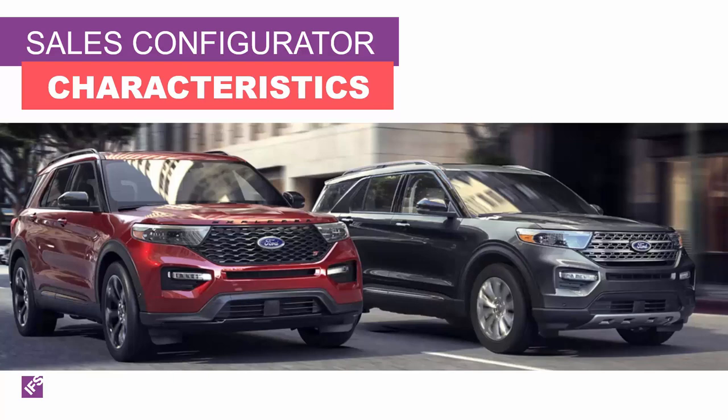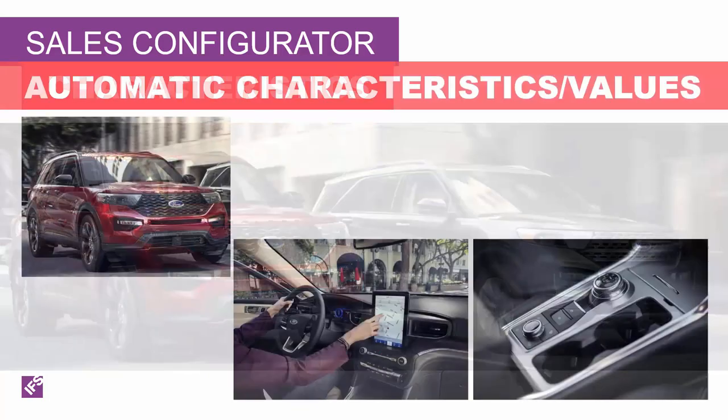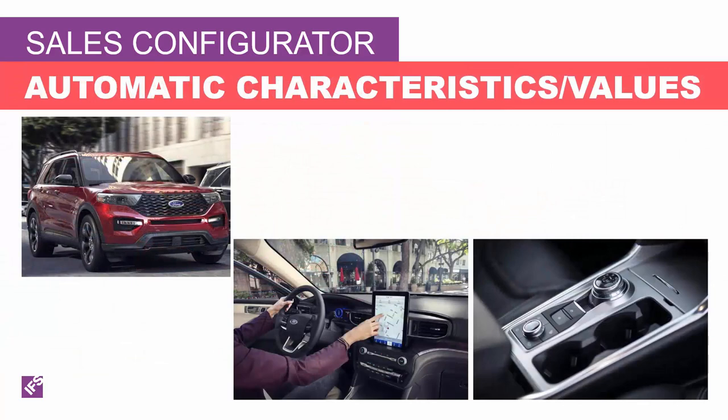The user is prompted to provide selections for features — the product attributes they desire, known as configuration characteristics — and the options, or characteristic values. Attributes and attribute values can be attached or removed automatically to ensure a correct product configuration is created. For example, when you pick a certain model car, you automatically select the large GPS screen and the 10-speed transmission. During user selection, all characteristics and their values are evaluated to ensure compatibility with each other.